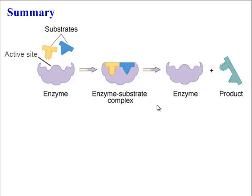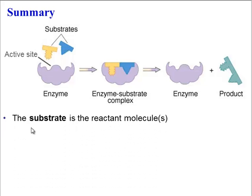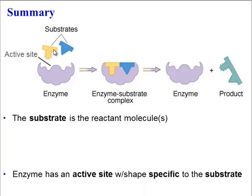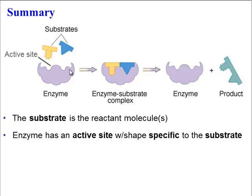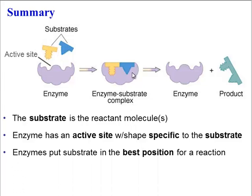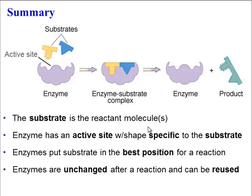Let's sum up everything we've learned about enzymes. The reactant molecule that the enzyme acts on is the substrate. The enzyme has an active site that is specific to its particular substrates, putting them in the best position for a reaction. If it weren't for this enzyme, the substrates might float around forever and never come into contact, and thus never form the product — but the enzyme makes sure they get together quickly. After the reaction, the enzyme is unchanged, so it can be reused. And finally, enzymes can catalyze both hydrolysis and synthesis reactions.